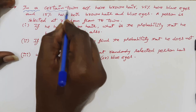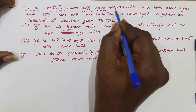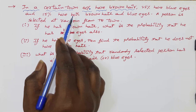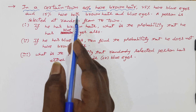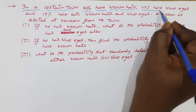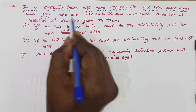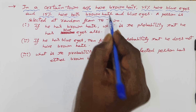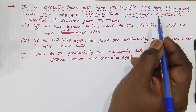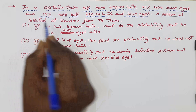In a certain town, 40 percent of people have brown hair, 25 percent have blue eyes, and 15 percent have both brown hair and blue eyes. This is the data from that town.